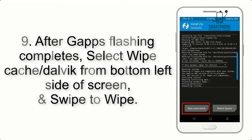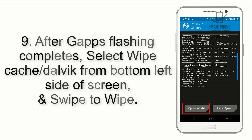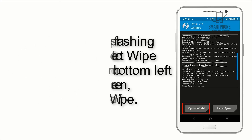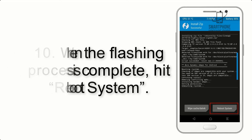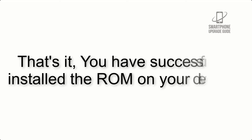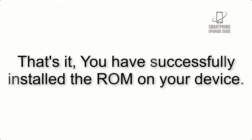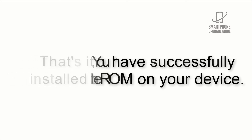Step 9: After GApps flashing completes, select Wipe Cache and Dalvik from the bottom left side of the screen and swipe to wipe. Step 10: When the flashing process is complete, hit Reboot System. That's it — you have successfully installed the ROM on your device.